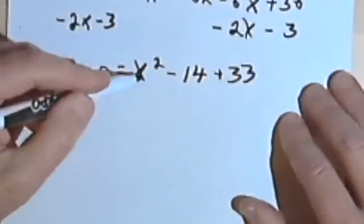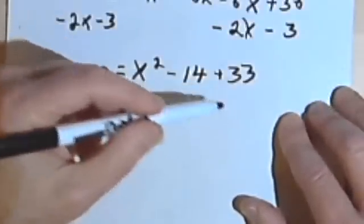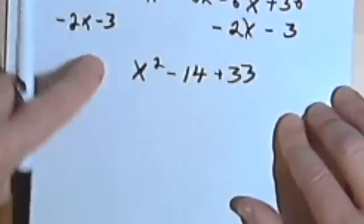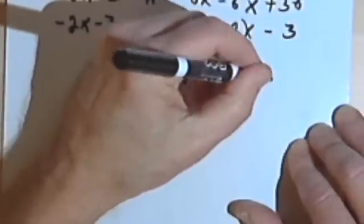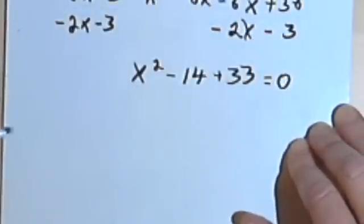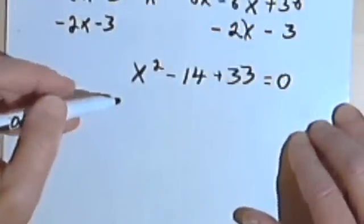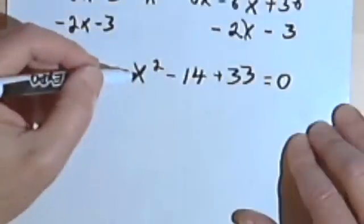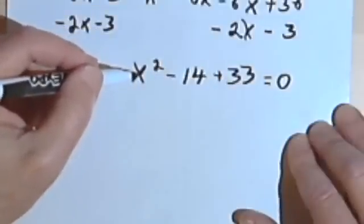So I've got zero equals x squared minus 14x plus 33. What I'm going to do is put the zero on the other side of the equation. It doesn't matter where I put it, but we're usually used to having it look like that. And then I've got to factor this, because I want to find out what x could be.